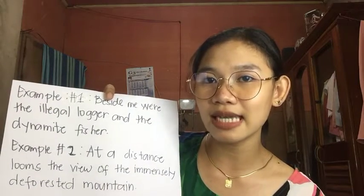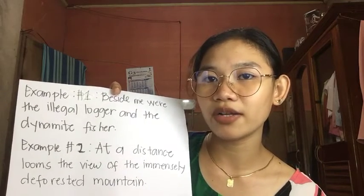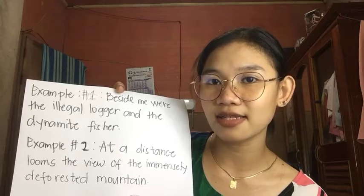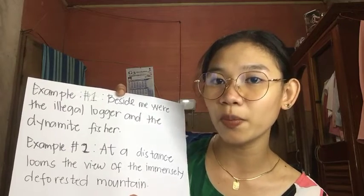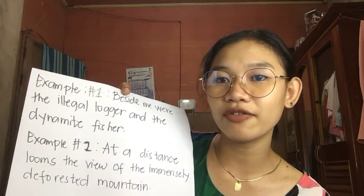Rule twenty-four: for sentences following inverted order, the verb still agrees with the subject regardless of the number of the noun that comes before it. Example: 'Beside me were the illegal logger and dynamite fisher.' Second: 'At the distant lobes the view of the immensely deforested mountain.' In example one, we have the past tense verb 'were' agreeing with the subject. In example two, we have the verb 'lobes' agreeing with the subject. That's all. Thank you for watching.